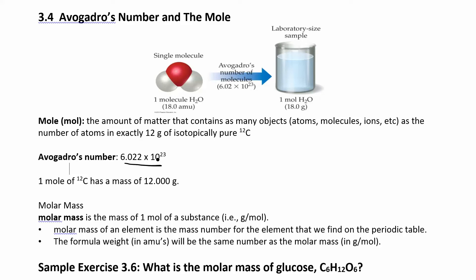Now it's based off of carbon. So if I were to weigh out exactly 12 grams of isotopically pure carbon-12. So that means, remember how we have isotopes like carbon-12, carbon-13, we have different isotopes of carbon.